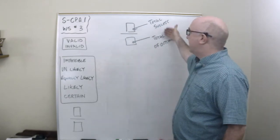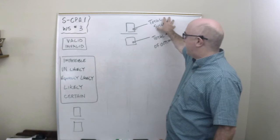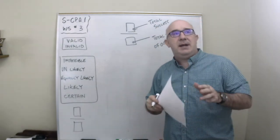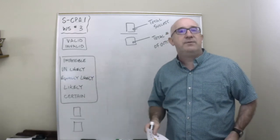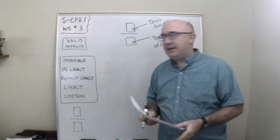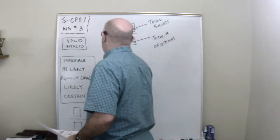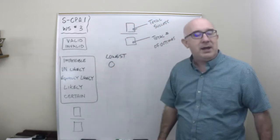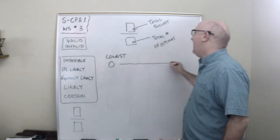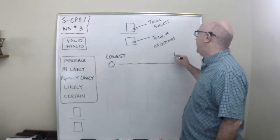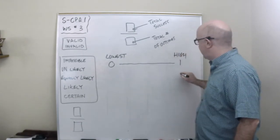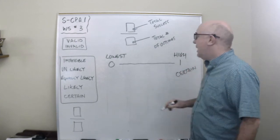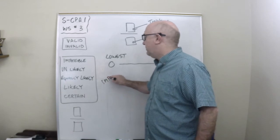A probability is always set up as success over total outcomes. This creates a range of possible values. Your lowest value is zero — impossible to happen — and the highest value is one — certain to happen.